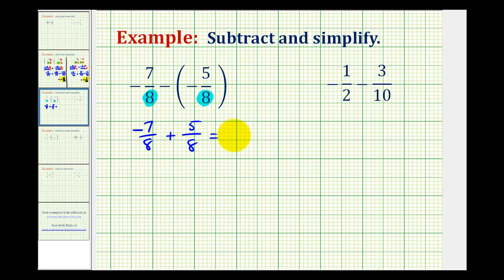And now we can add these two fractions. The denominator stays the same. And then we add the numerators. So negative 7 plus 5 is equal to negative 2.